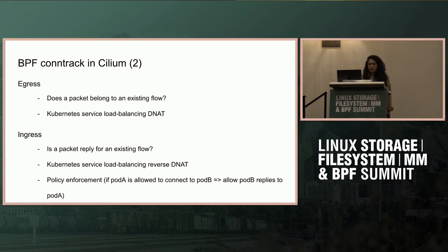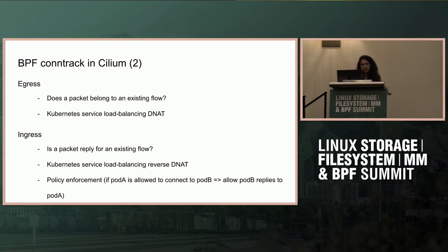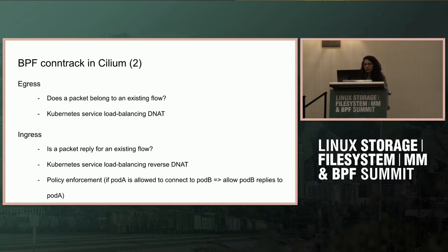On the ingress side, Cilium tracks packet replies — mainly to know whether a packet is a reply to an existing flow. Then it does the reverse translation, translating the service backend IP address back to the original service VIP. In addition, it also uses this information for policy enforcement: if pod A is allowed to connect to pod B, then pod B replies are allowed by default.